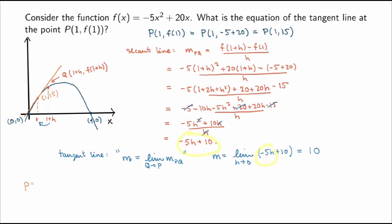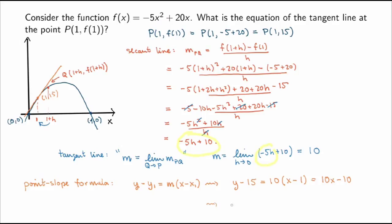Now I finish the problem by finding the equation of the tangent line using the point-slope formula, since I know a point and the slope. The formula is y - y₁ = m(x - x₁). Substituting y₁ = 15, m = 10, and x₁ = 1: y - 15 = 10(x - 1), so y = 10x - 10 + 15, giving the final equation y = 10x + 5.